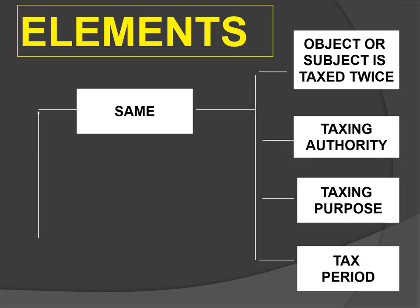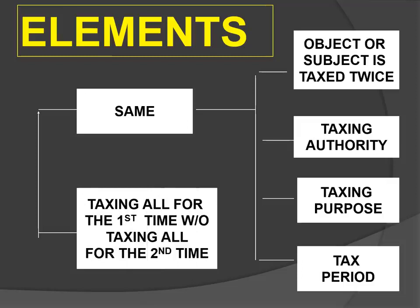Even if all the elements of sameness are present, there is still no direct duplicate taxation if there is no violation of the Equal Protection Clause and Uniformity Clause of the Constitution — in short, no discrimination. What makes it violative of the Constitution is the second element: taxing all for the first time without taxing all for the second time, without showing any valid reason why, for the second time, not all of them are going to be subject to tax.